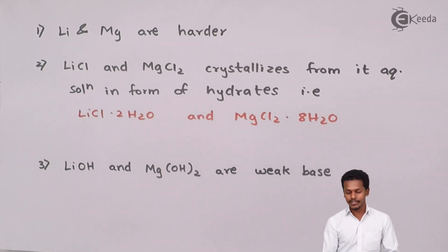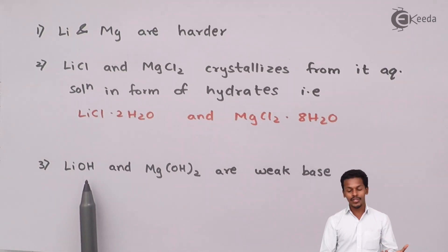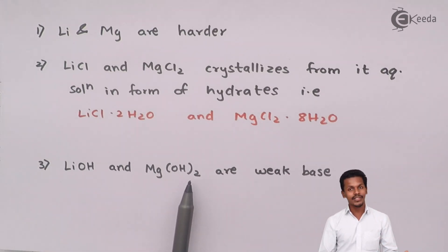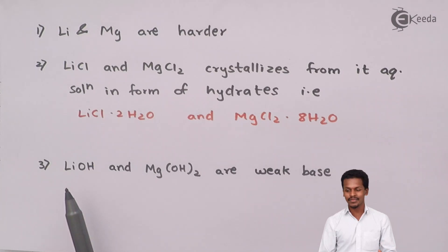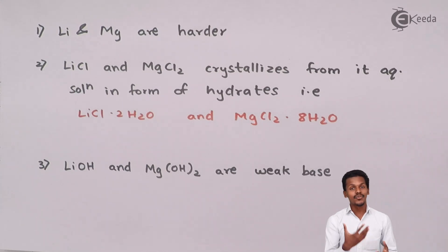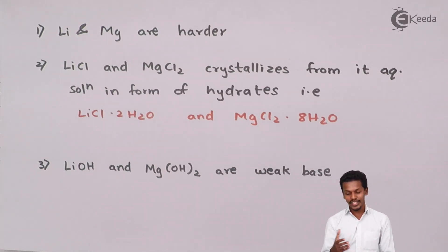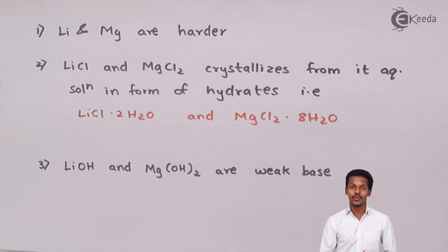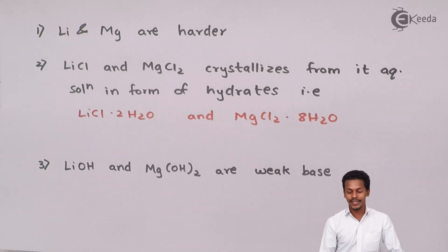The hydroxides of lithium, LiOH, and magnesium, Mg(OH)₂, are both bases, but they are both weak bases. In contrast, NaOH and KOH are strong bases. This is how lithium and magnesium have a relationship with each other and are different from the other elements of their own groups — lithium is different from the other group 1 elements in this regard.